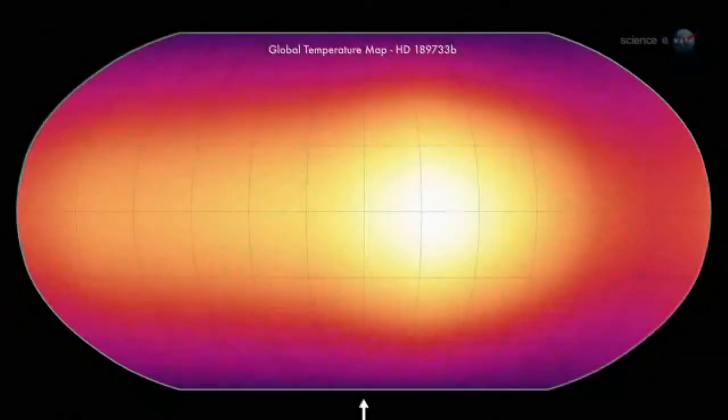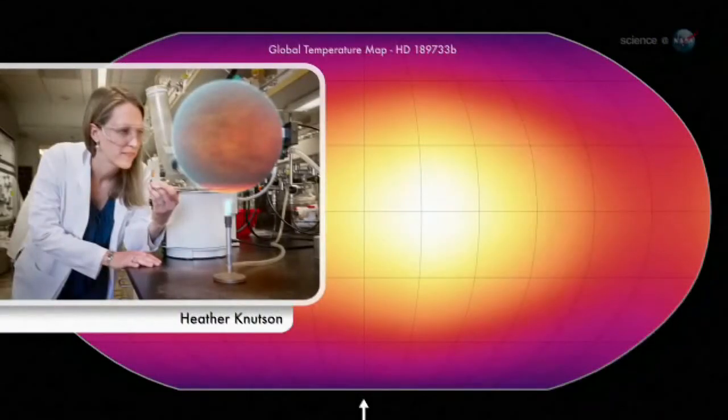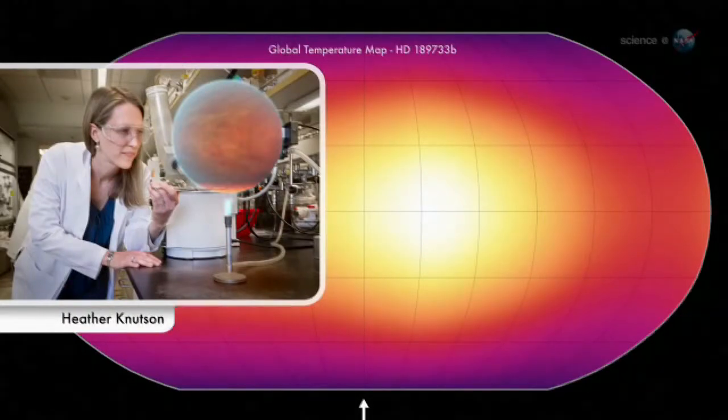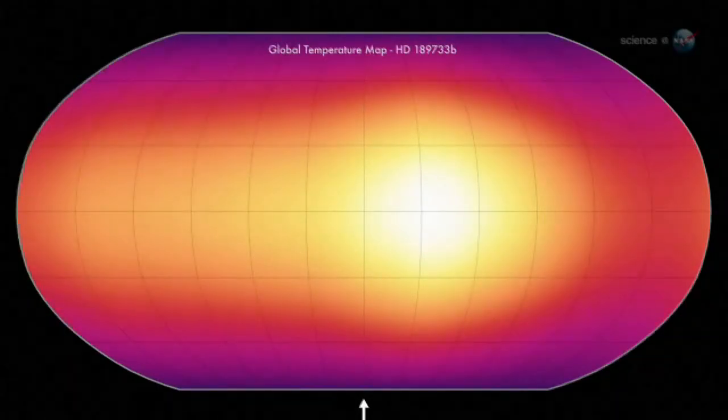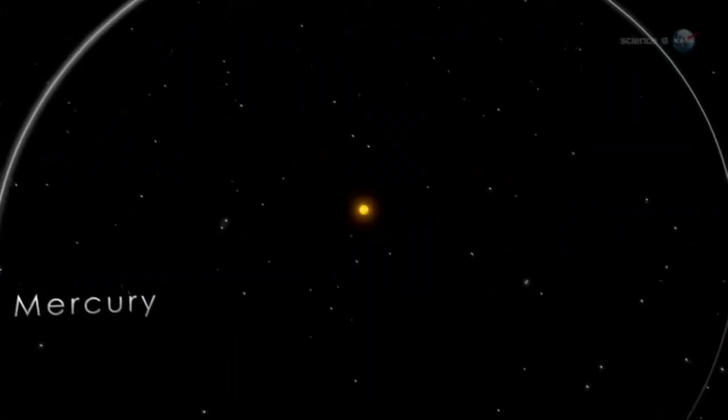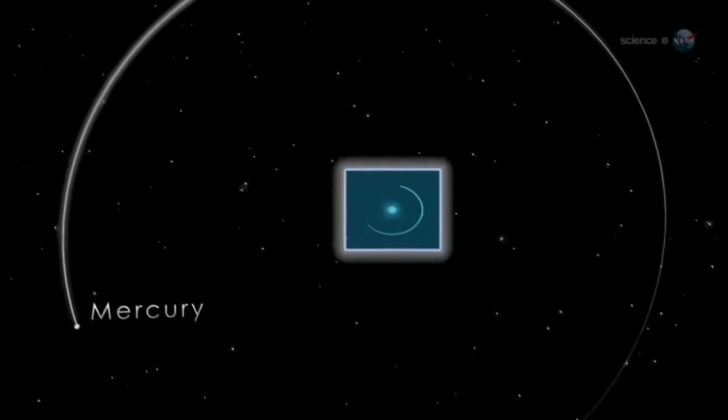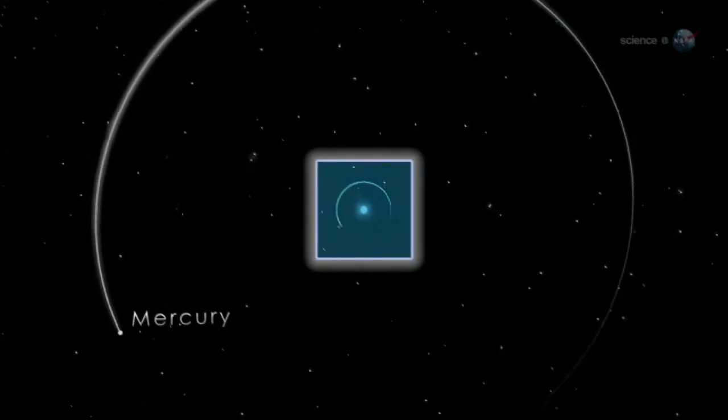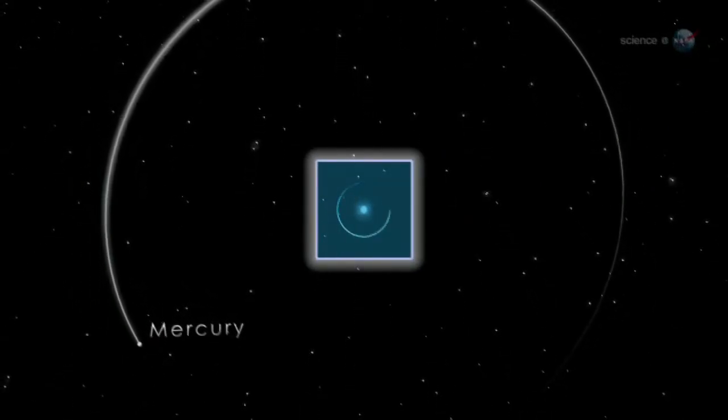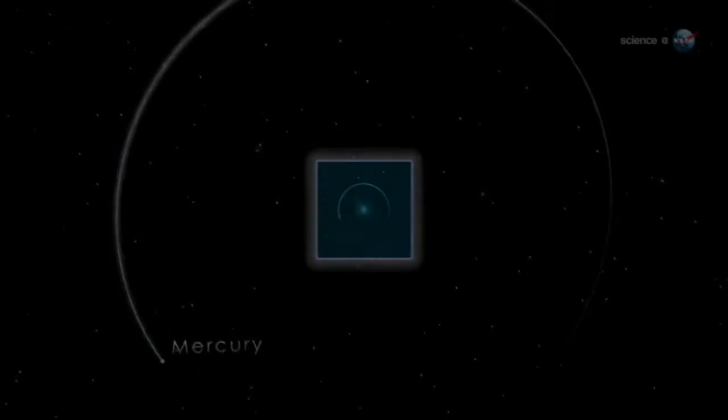In 2007, Heather Knudsen of Caltech made a global temperature map of HD 189733b using NASA's Infrared Spitzer Space Telescope. She knew it would be hot because HD 189733b orbits its star 13 times closer than Mercury orbits our Sun. Even so, we were impressed by the readings, she recalls.